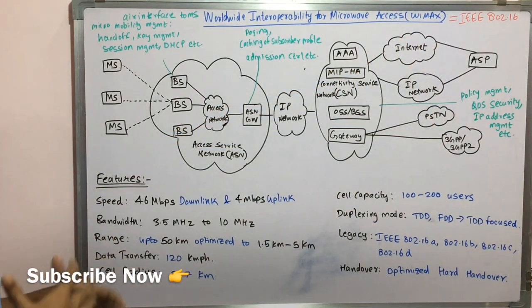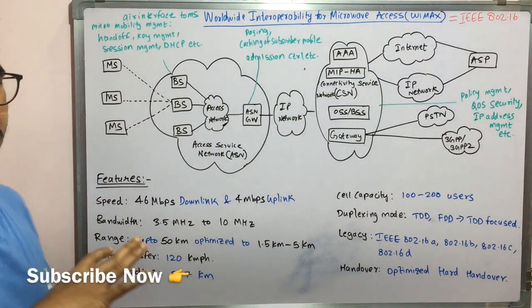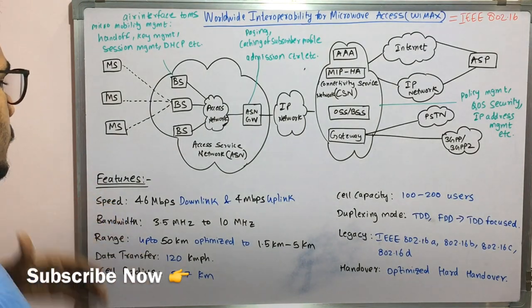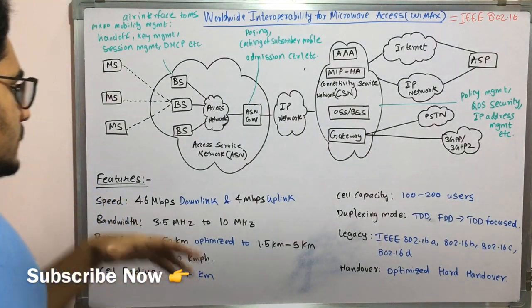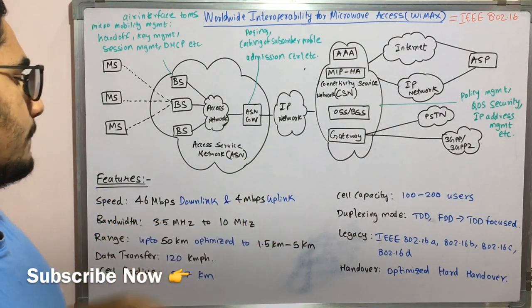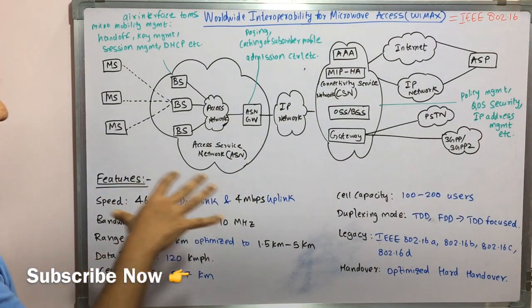So let's see some of the features which are possessed by the WiMAX system. So basically we have taken nine different features. Very first is the speed. To talk about the speed, the downlink speed of WiMAX system is about 46 Mbps and the uplink speed is about 4 Mbps. Then you have the bandwidth. So the bandwidth which WiMAX systems gives is 3.5 megahertz to 10 megahertz.